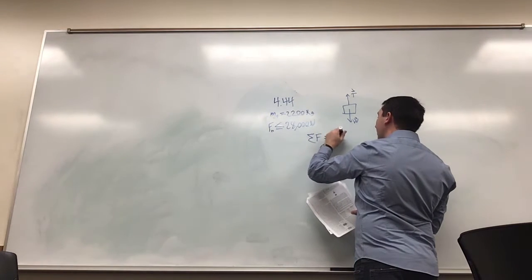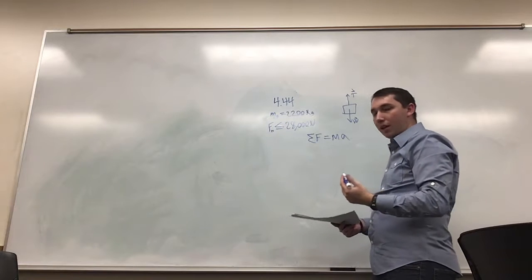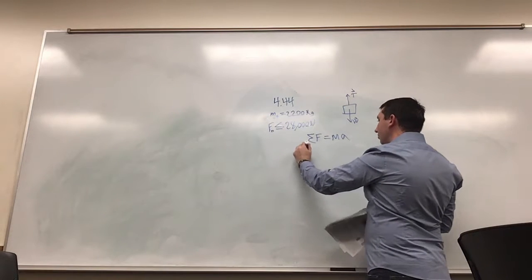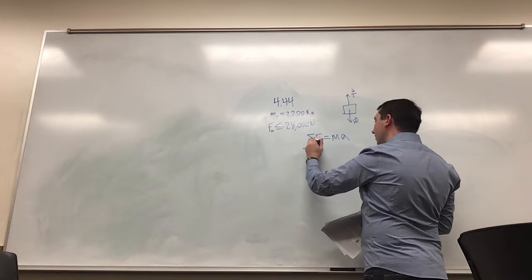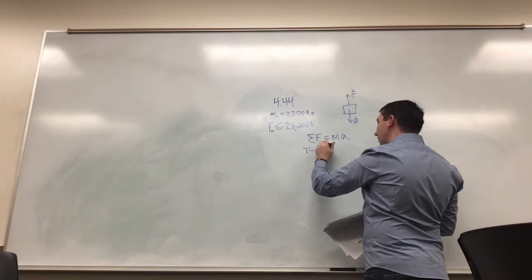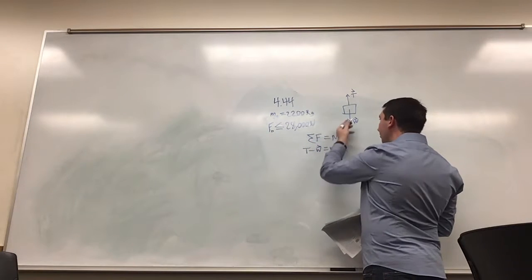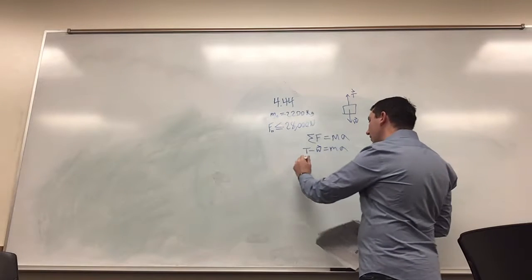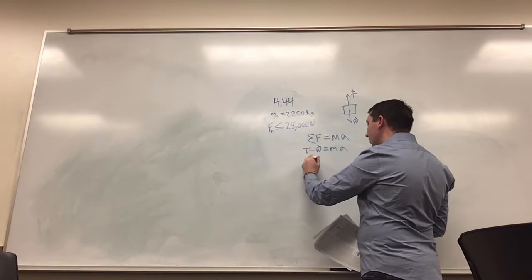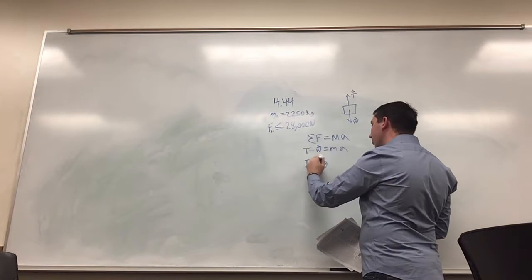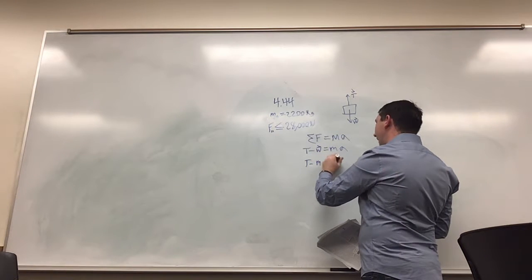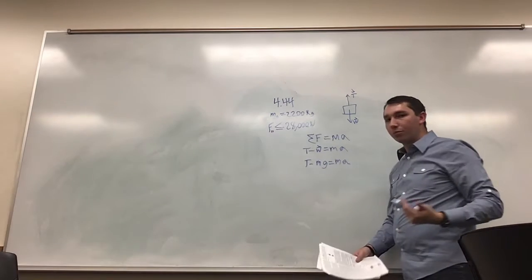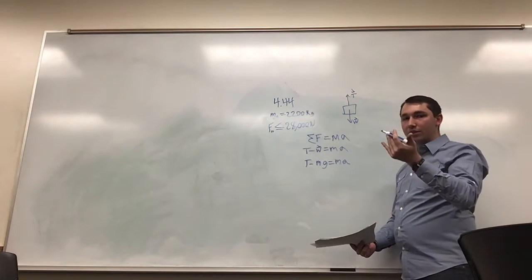The forces are going to be the tension minus the weight, which equals mass times acceleration. We know that the weight is just the mass times the pull of gravity, so the tension is going to equal mass times acceleration plus mass times gravity.